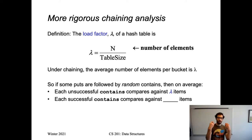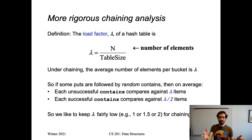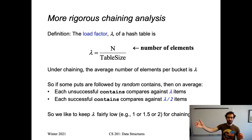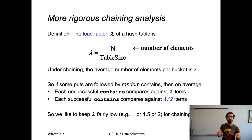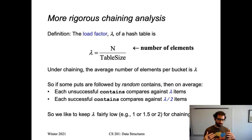For a successful contains, on average we compare to half of the elements in our chain, since on average it will be found halfway through. So we want to keep lambda fairly low — if we let lambda get really large, our table is small relative to the number of things stored, leading to potentially long linked lists. We want to keep the load factor fairly low to get good performance from separate chaining. These are the assumptions by which we get constant time performance — that the load factor is kept fairly low.